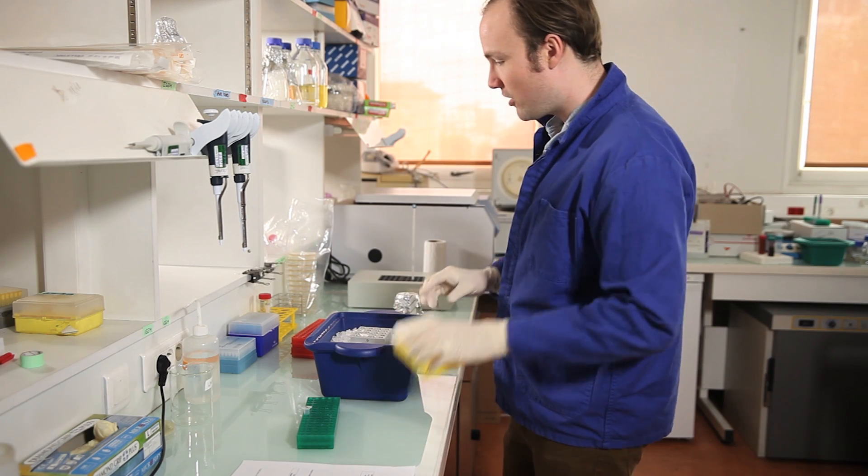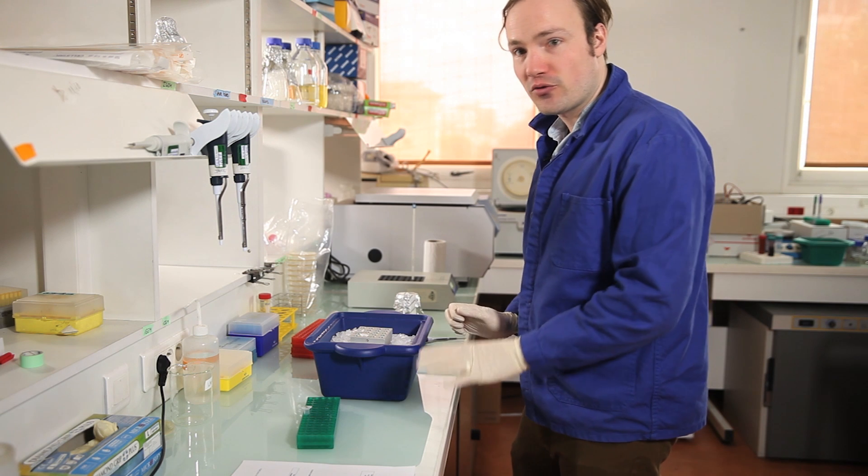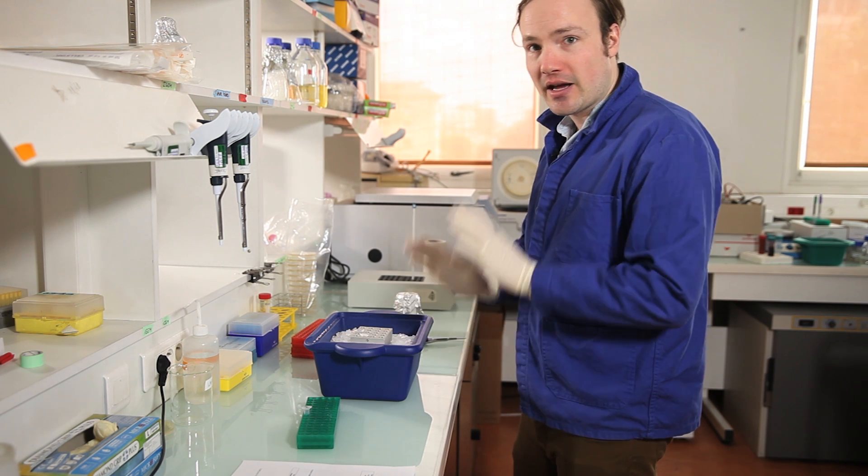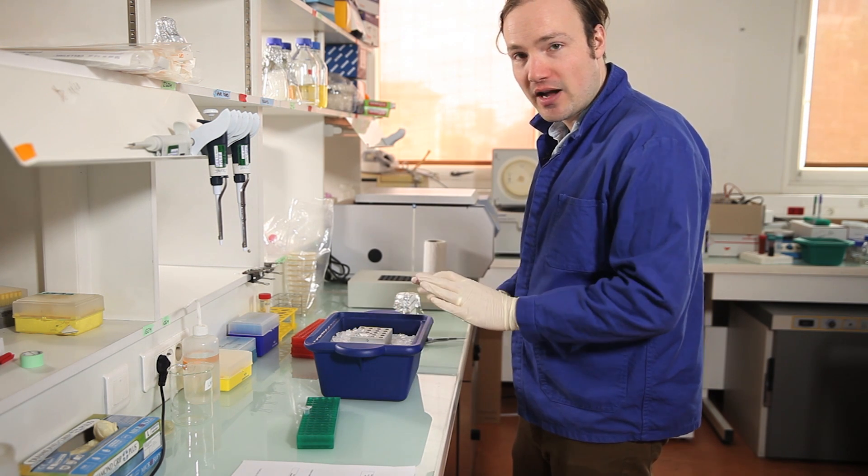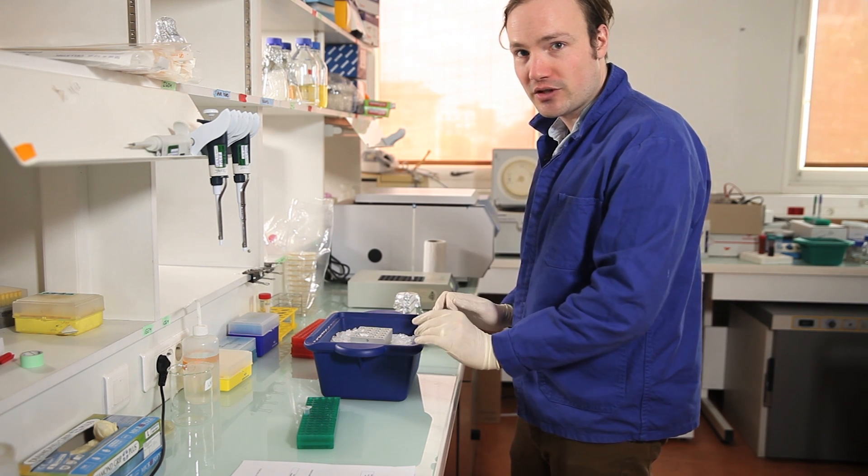To this, I'm going to add just a half a microliter of the plasmid that I want to transform. So in this case, we're transforming an intact plasmid at a very high concentration. So I only need to add a tiny, tiny amount to the cells for a successful transformation.